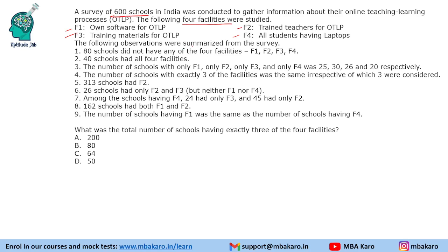The following observations were summarized from the survey: 80 schools did not have any of the 4 facilities, and 40 schools had all 4 facilities, along with some more statements. By just reading this piece of information, we can easily figure out that it is about a 4-set Venn diagram.